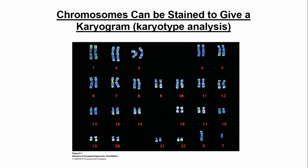Chromosomes can be stained and lined up using a computer program to form something called a karyotype, or karyogram. This is checking to see if somebody has all the chromosomes they should have — 23 pairs — and whether the right chromosomes are in the right pair. Here you can see this is a male because it's XY, with two pairs of each chromosome. Sometimes you'll have trisomy at chromosome 21 or 18, and trisomy 21 in particular can result in Down syndrome.